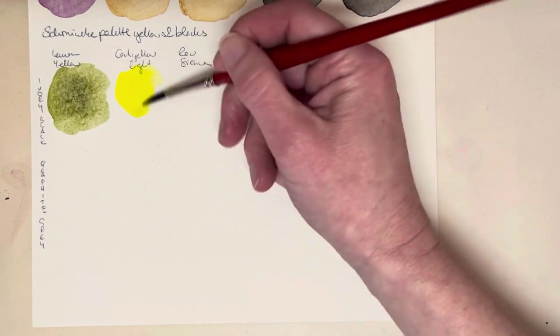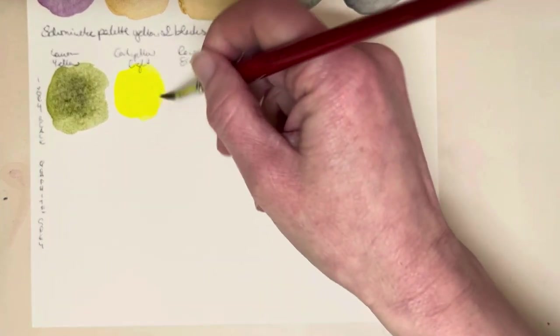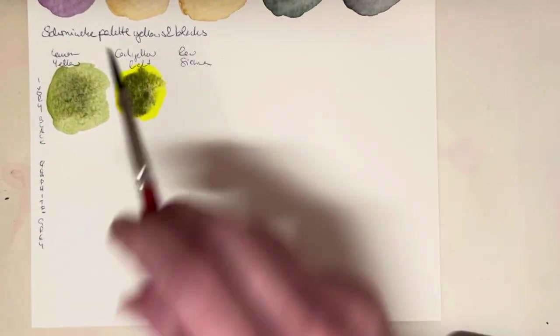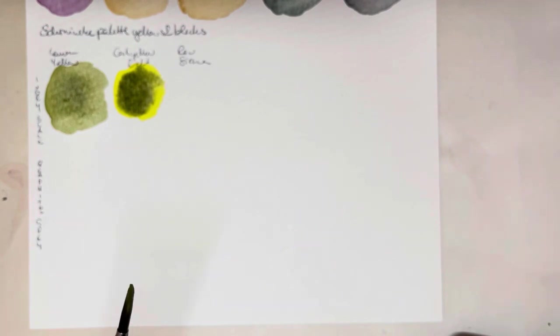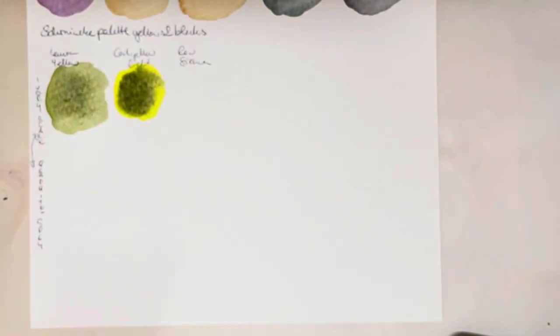And now we do the same with the cadmium yellow light. You know what, I've already made a mistake because I didn't use the ivory black, that's the graphite gray actually, so let me just switch these around.